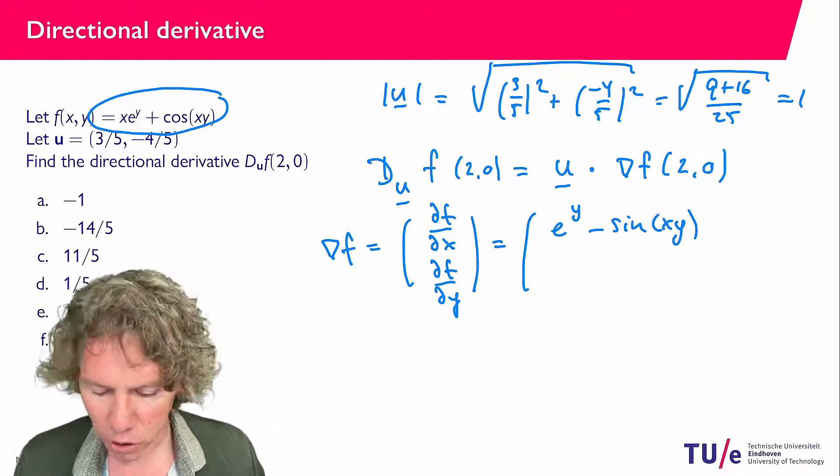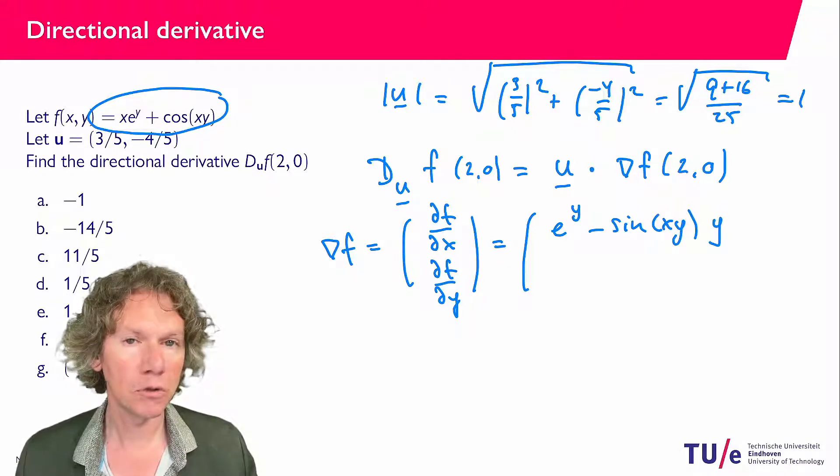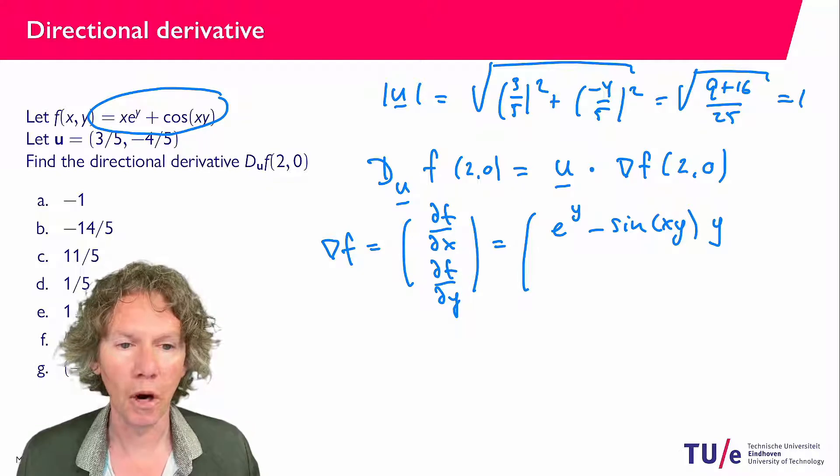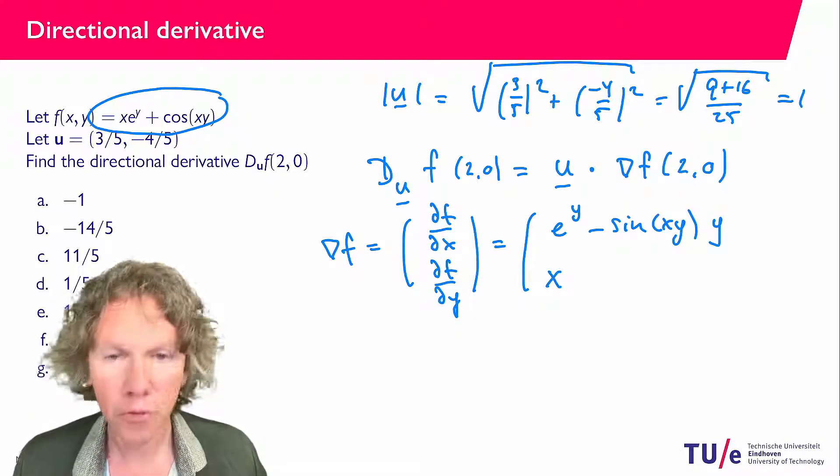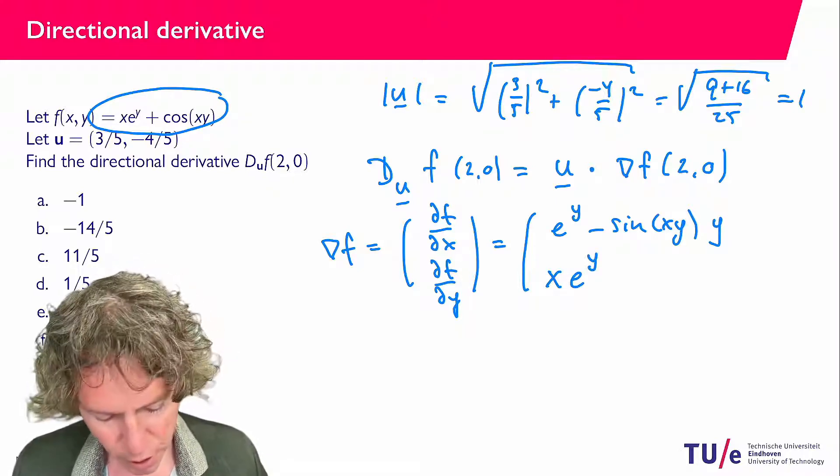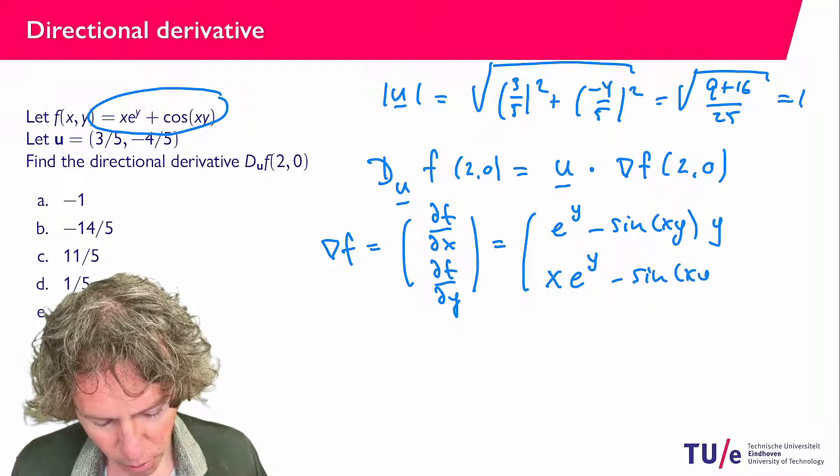For the second component, what I need to do is differentiate with respect to y, so x acts like a constant. I'm just copying that. The derivative of e^y is e^y. The derivative of the cosine again is minus sin(xy), but now the chain rule gives us an additional x.